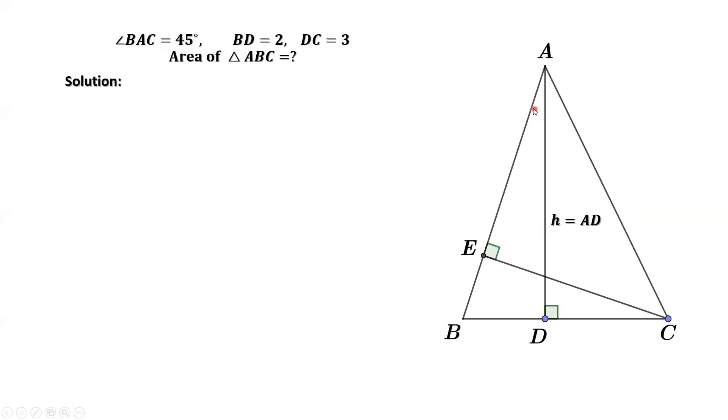From right triangle ABD, we have AB equals square root of BD square plus AD square. BD equals 2, AD equals H. Square root of 2 square plus H square equals square root of 4 plus H square.